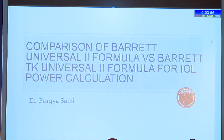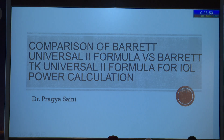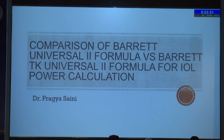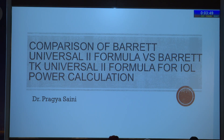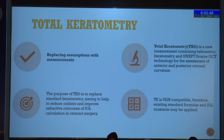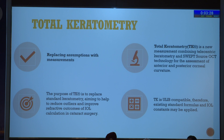The topic of my thesis was comparison of Barrett's Universal 2 formula versus Barrett's TK Universal 2 formula for IOL power calculation. This stemmed from the fact that initially we measured only the anterior keratometry for IOL power calculations, and so the need for total keratometry came to view — replacing assumptions with measurements. The purpose of TK was to replace the standard keratometry, aiming to reduce outliers and improve the refractive outcome of IOL power calculation.